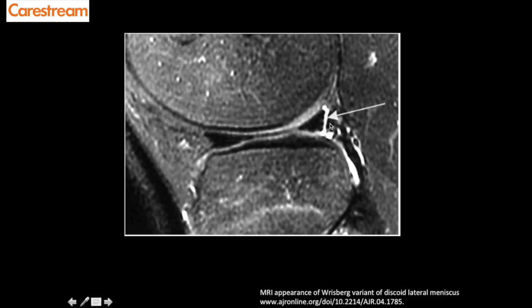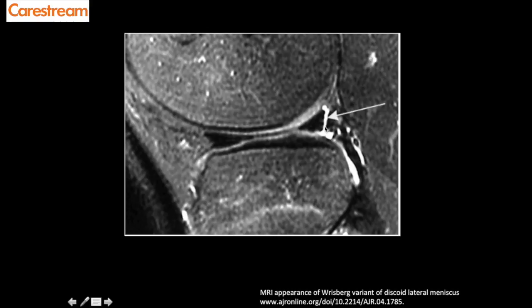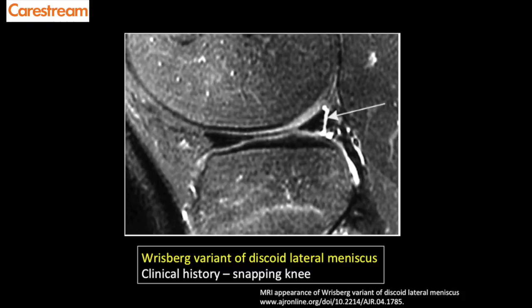The Wrisberg variant of discoid meniscus: normally, popliteal meniscal fascicles are visible between the posterior horn of the lateral meniscus and the popliteal tendon sheath. When no fascicles are visible and instead a clear fluid-filled gap is present in this region, this is the Wrisberg variant. If the patient has no history of trauma and intact cruciate ligaments, do not label this as a tear — report it as Wrisberg variant of discoid meniscus with lack of visualization of popliteal meniscal fascicles. These patients classically present with a clinical history of snapping knee.